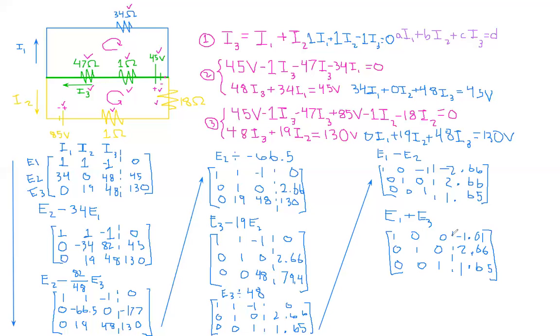So now you're done. We have 1, 0, 0, 0, 1, 0, 0, 0, 1. And so that means 1 I1 equals negative 1.01. So I1 equals negative 1.01 amps. And then I2 is 2.66 amps. And I3 is 1.65 amps. So yeah, that's how you solve for the currents using matrices.